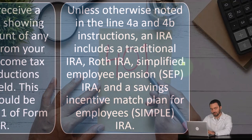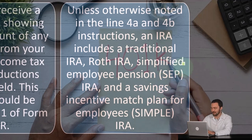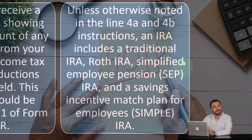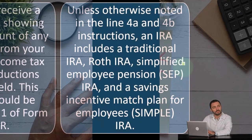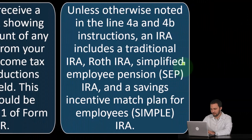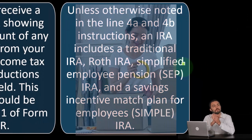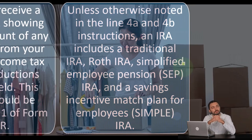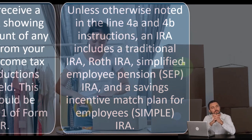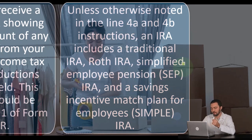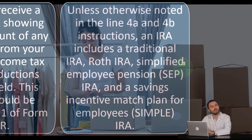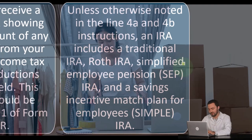Then there's the simplified employee pension — a SEP plan. This is similar to a 401k plan, but it's for smaller businesses because 401k plans are quite expensive to manage. If you're a sole proprietor, you might set up a SEP type of plan for yourself to be able to put more money in than you otherwise could in a regular IRA. We may talk more about that when we get to Schedule C.